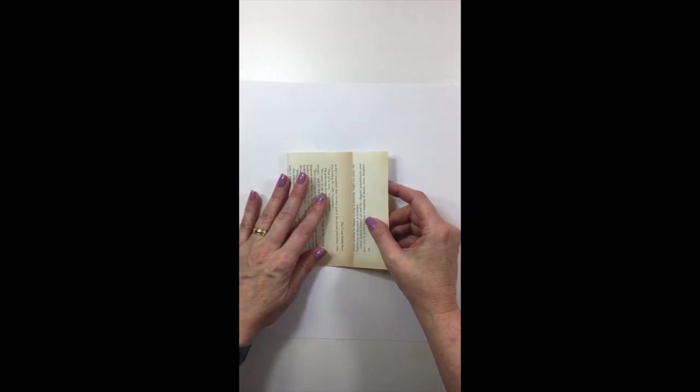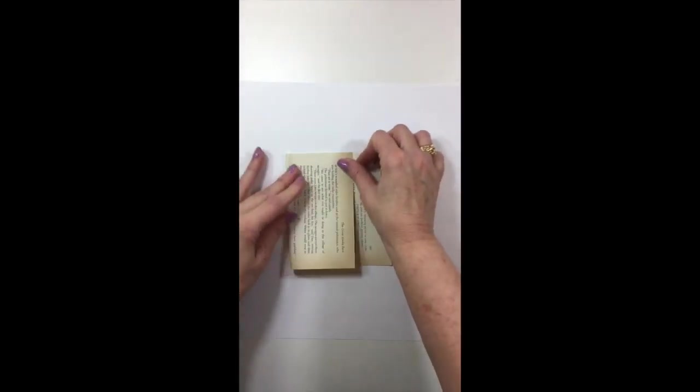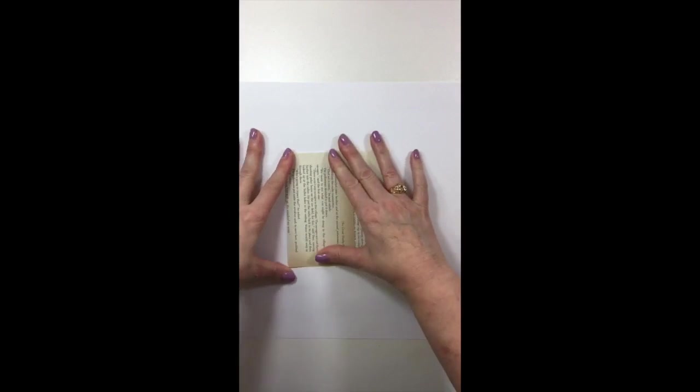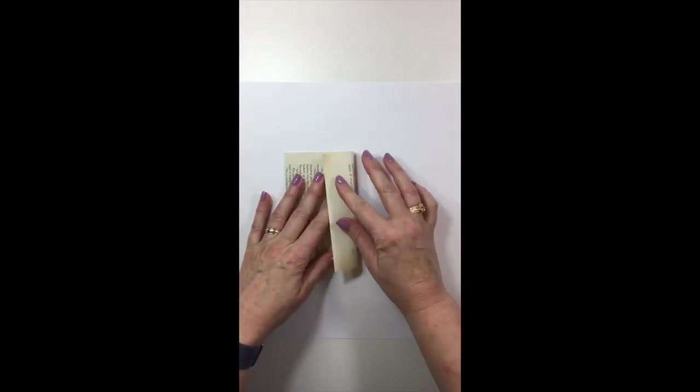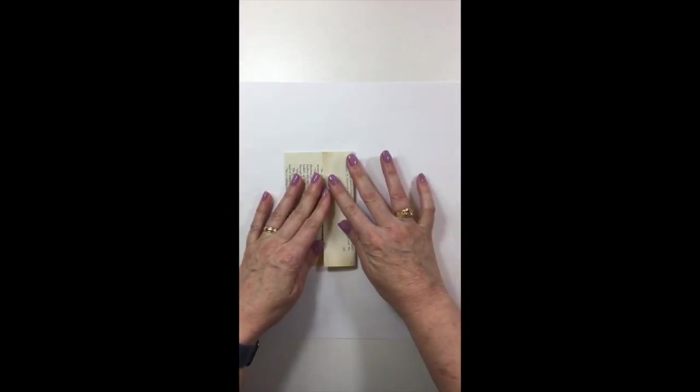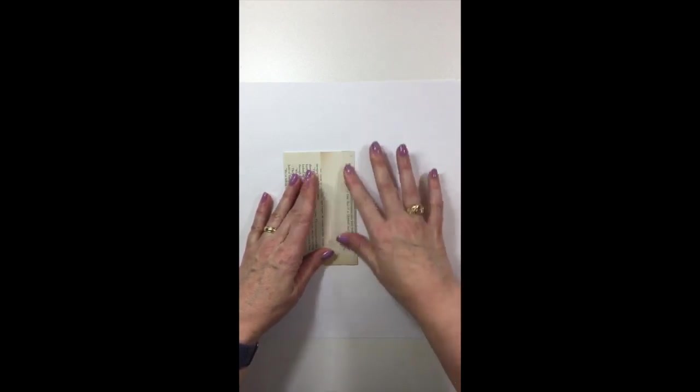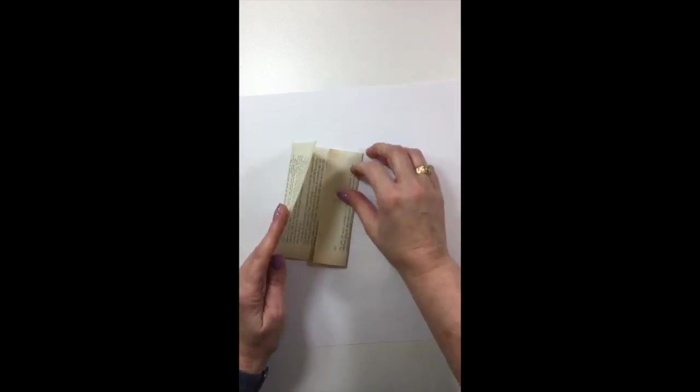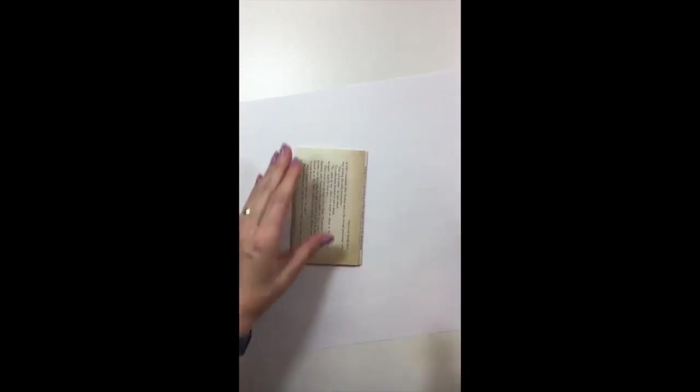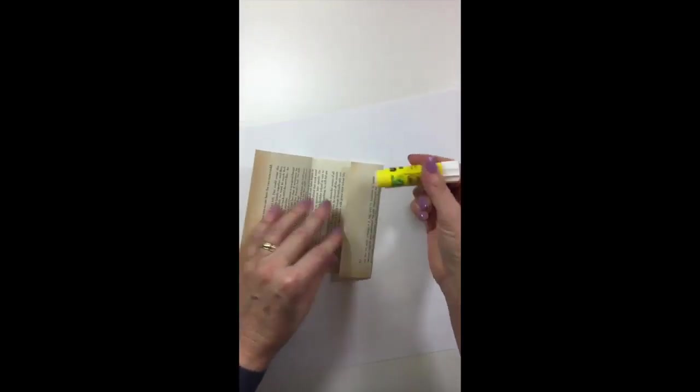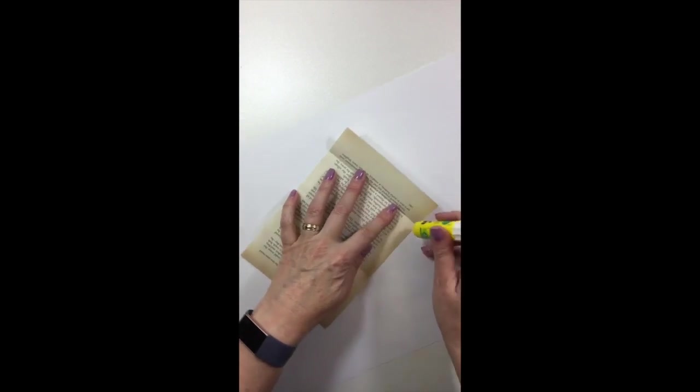All right, let's just get started here. These are so easy. I just take one book page and decide how wide you want it. That's about the width I want, and then I just fold that over.